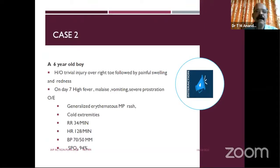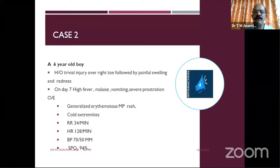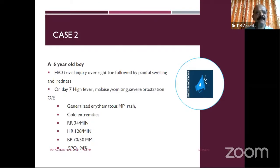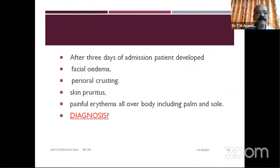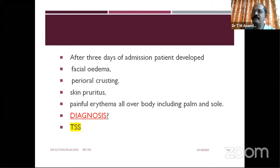The second case: a six-year-old boy following a trivial injury presented with painful swelling; seven days of high-grade fever, malaise, vomiting, and severe prostration. On examination: generalized erythematous maculopapular rash all over the body, tachycardia, BP on the lower side — multi-system involvement. After three days, the patient developed facial edema and involvement of other systems, with painful erythema. In a six-year-old with minor injury developing multi-system involvement, think about toxic shock syndrome.